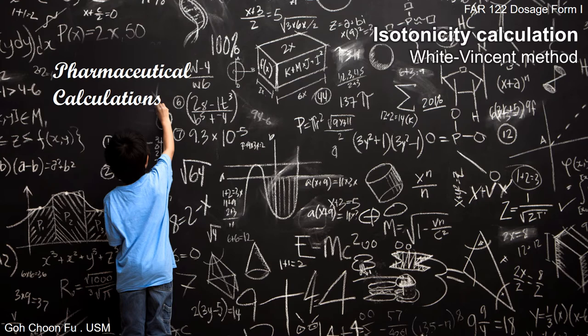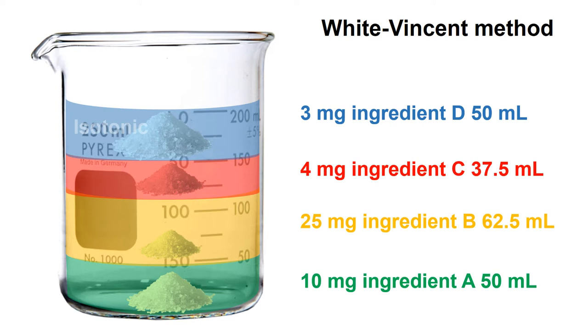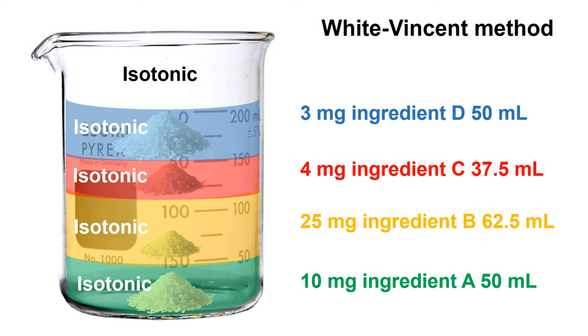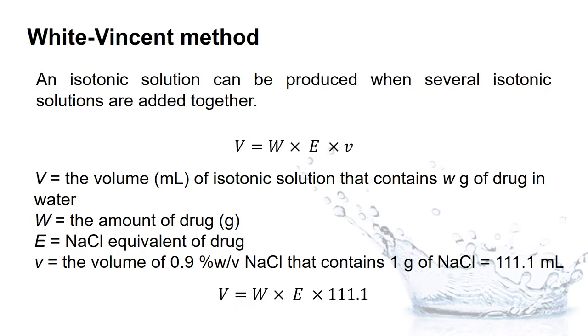Welcome to the eighth part of pharmaceutical calculations. In this short lecture we are going to discuss the use of White-Winson methods for isotonic calculations. The White-Winson method uses the concept of adding several isotonic solutions together to produce an isotonic solution in the end. Given four different types of ingredients, each producing isotonic solutions in different volumes, we can calculate how much volume is needed using the White-Winson method.